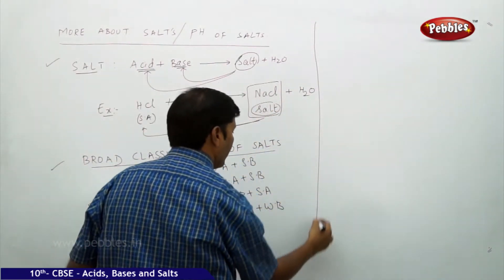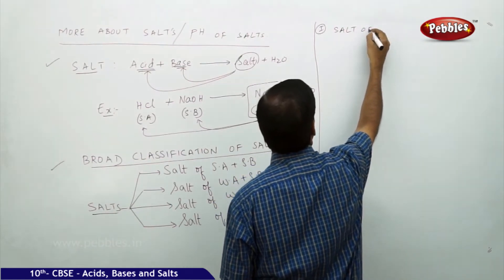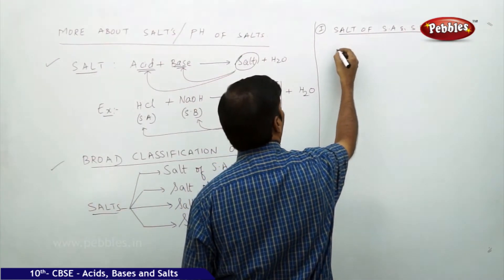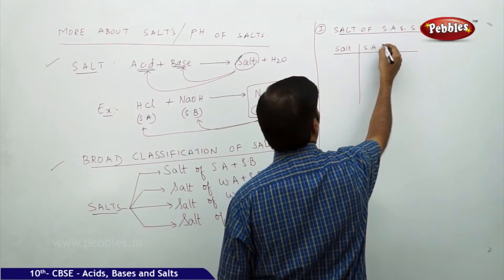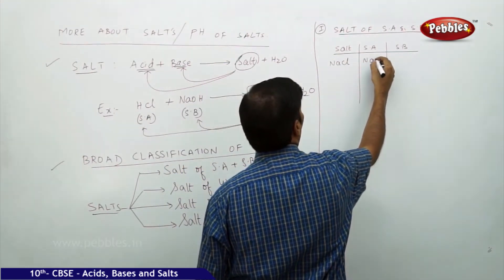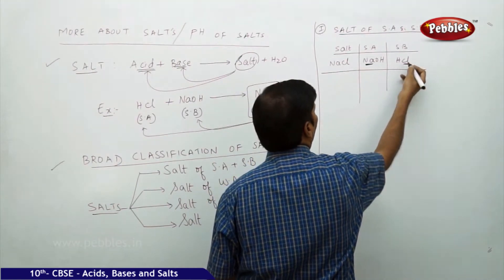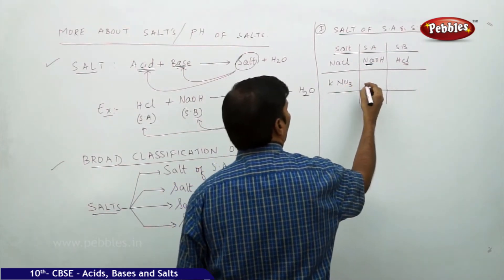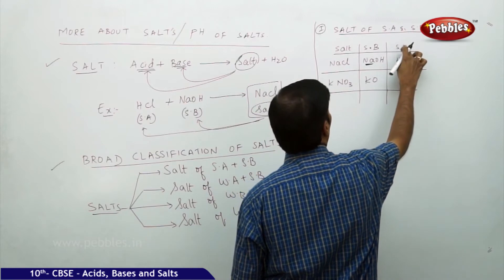For the first category — salt of strong acid and strong base — let's take some examples. A salt of strong acid and strong base will contain a metal and a non-metal. For instance, potassium nitrate: I take KOH as the strong base and HNO3 as the strong acid.